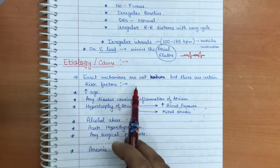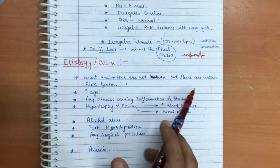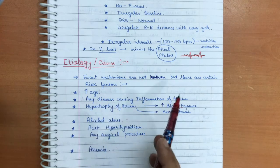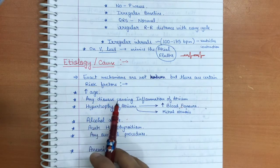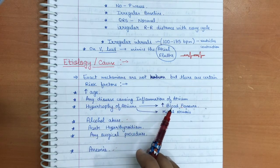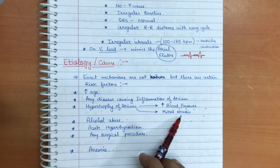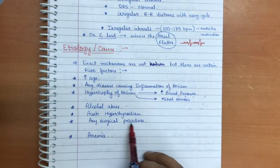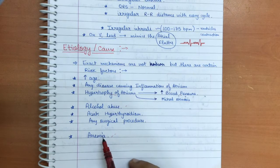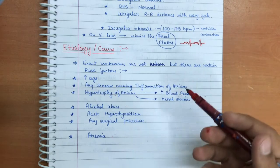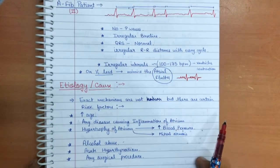Now, what is the etiology of atrial fibrillation? The exact mechanism is not fully known, but there are certain risk factors: increased age, any disease causing inflammation or hypertrophy of the atrium, increased blood pressure, mitral stenosis, alcohol abuse, acute hyperthyroidism, any surgical procedure, and in some cases anemia. These are the main etiological factors that can lead to atrial fibrillation.